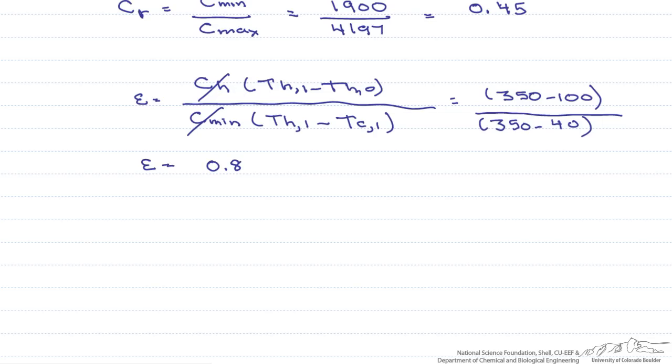Now, we have to use the relationship between the NTU and the effectiveness for our particular flow arrangement. When we do the calculations, we find that our NTU is 2.1.